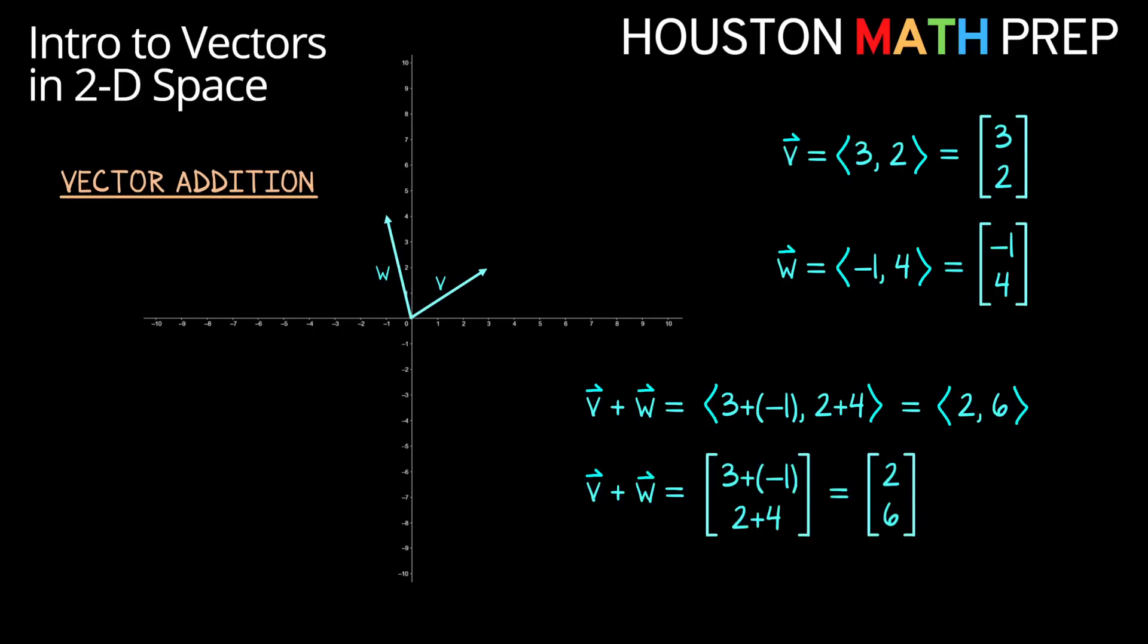We can also picture this happening in our matrix notation. V plus W will give us the addition of the top components and the addition of the bottom components. Same answer, just a different way of writing it.